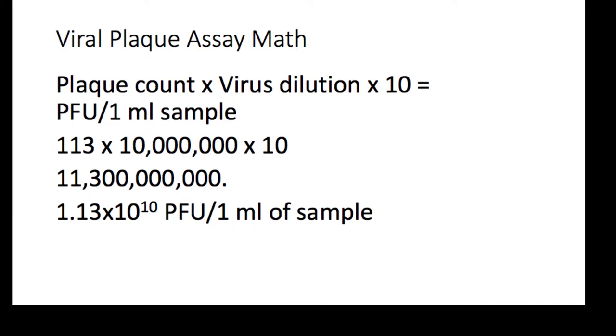So again, to set up your math, take your plaque count times the virus dilution times 10. So in my example, I have 113 for my plaque count, my virus dilution is 10 million, and then I'm multiplying by 10.